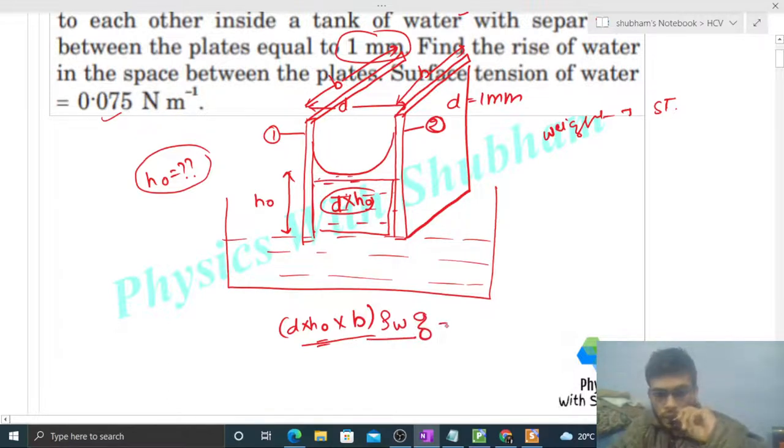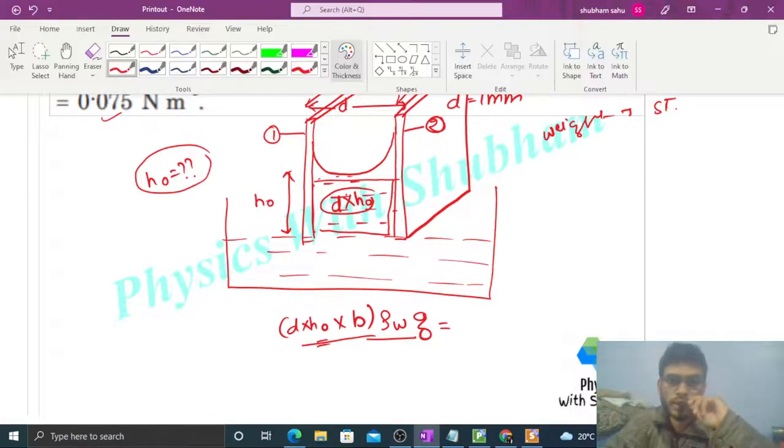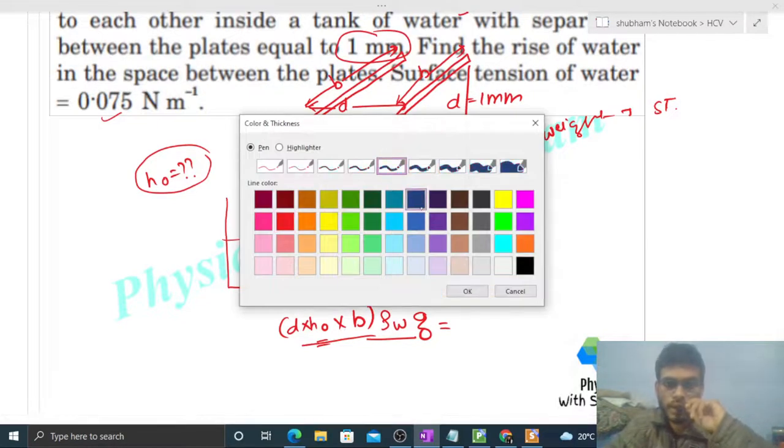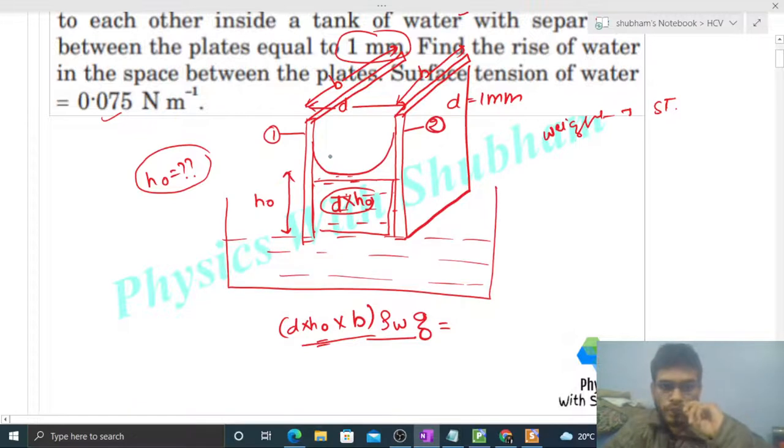This weight will be balanced by the force of surface tension. In which direction will the force of surface tension act? See, here it will act vertically upward. This is the surface tension force, vertically upward. Why upward? Because the angle here, this angle will be zero because the contact angle of water with glass is zero.